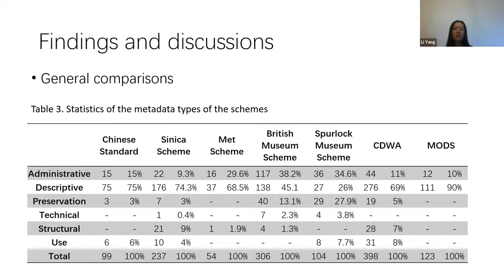Regarding metadata types, most schemes do not cover all types, and fields are unevenly distributed. Administrative and descriptive metadata constitute a major part, while technical metadata is the least common. The Cineca scheme embraces all types of fields, followed by the British Museum, Spurlock Museum, and CDWA schemes with five types each. The Chinese standard and Met scheme include four and three types respectively. MODS fields used to catalog rubbings only cover administrative and descriptive metadata — though that is not the complete MODS story.